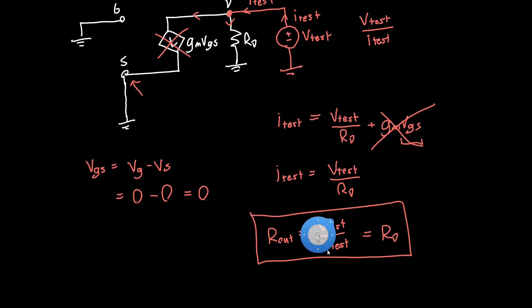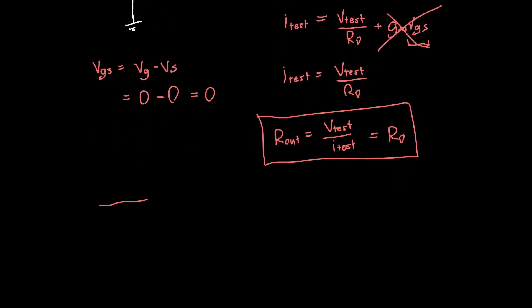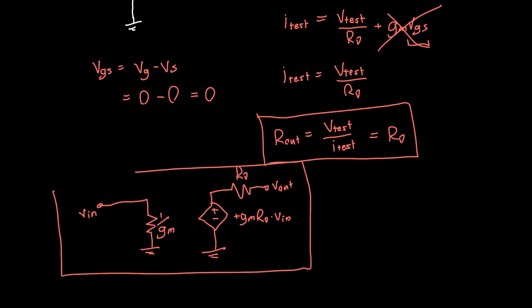This is the complete model for our common gate amplifier. We've got an input resistance of 1 over gm. This is the input voltage we're applying. We've got a gain of positive gm*RD. We've got an output resistance of RD. This is our output voltage. This is the final model of our common gate amplifier. Things will change a little bit, well considerably, once we add in the output resistance. That's what I'm going to do in the next video. But the result will just be a variation on this answer, a modification but not that severe.